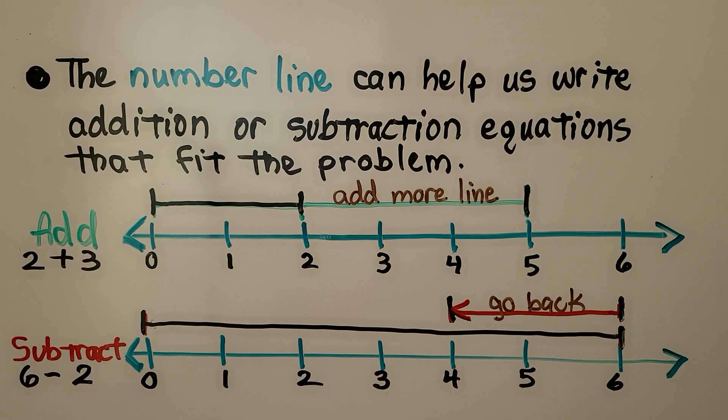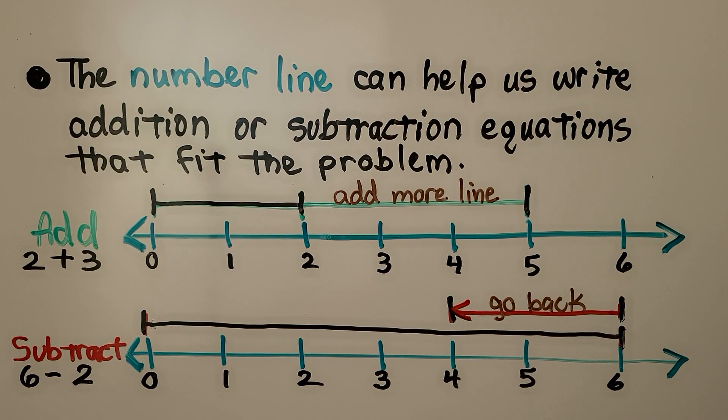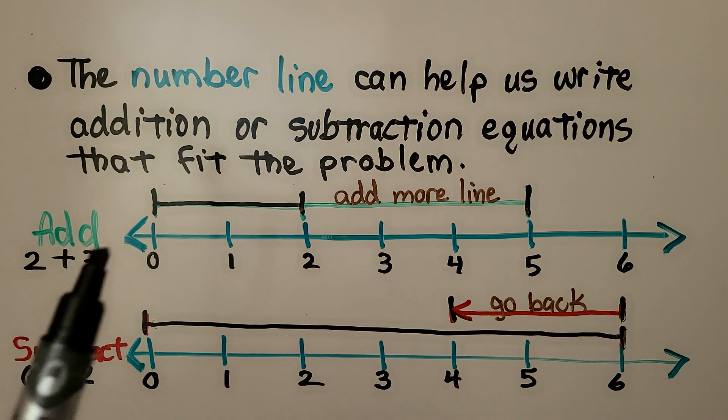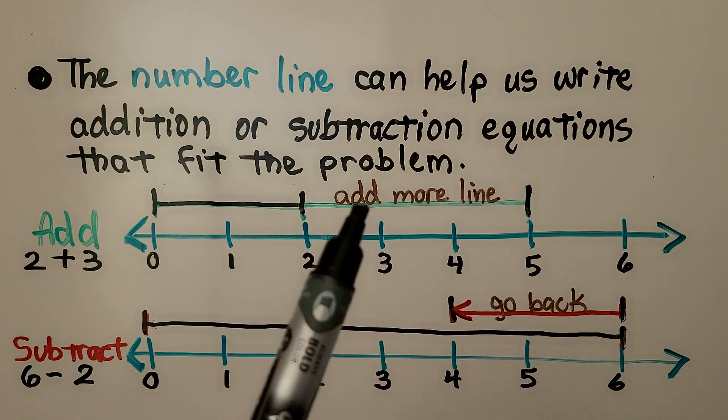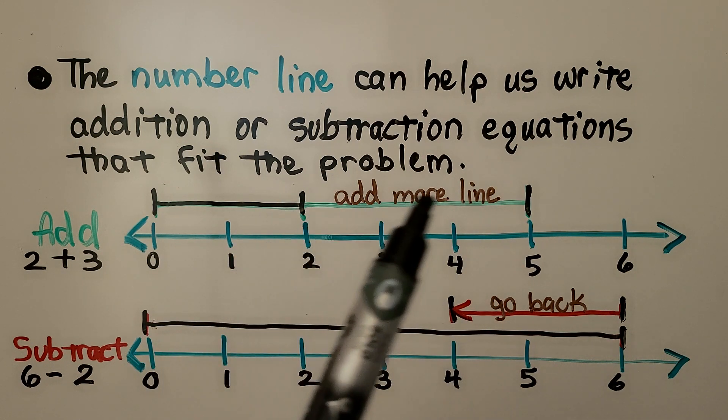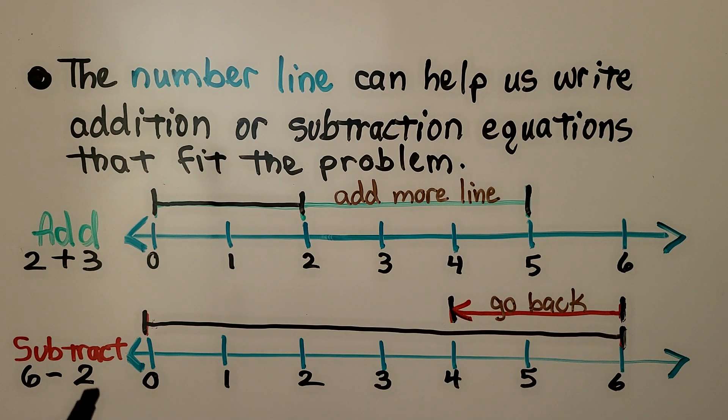The number line can help us write addition or subtraction equations that fit the problem. When we add, like 2 plus 3, we add more line. Here we are at 2, and to add 3, we add more line. When we subtract, we go back. We have 6 minus 2, we are at 6, and we go back 2, that puts us at 4.